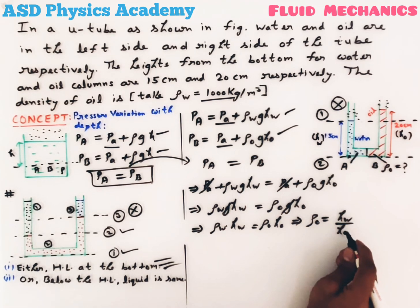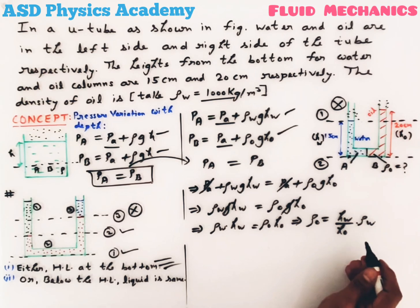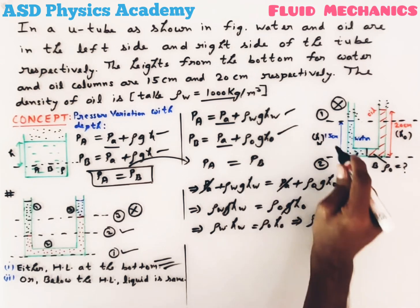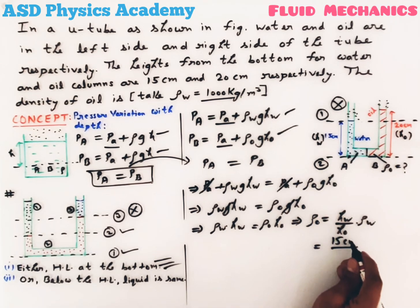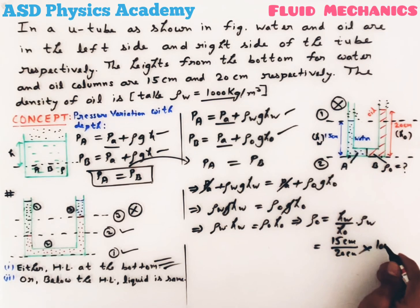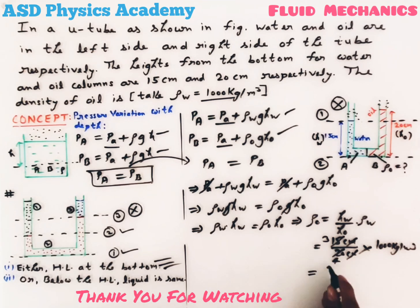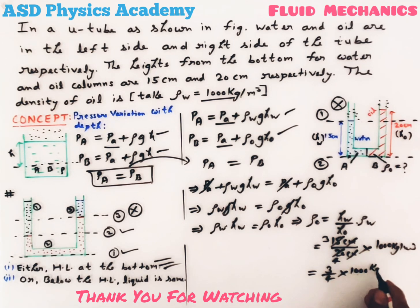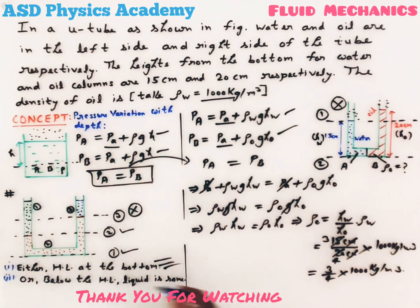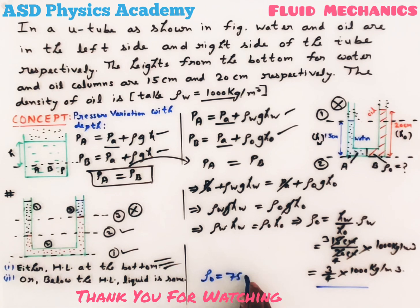Now putting in the values: h_w = 15 cm, h_0 = 20 cm, and density of water = 1000 kg/m³. The centimeters cancel out, giving us 15/20 = 3/4. Therefore density of oil equals (3/4) × 1000 = 750 kilograms per meter cube.